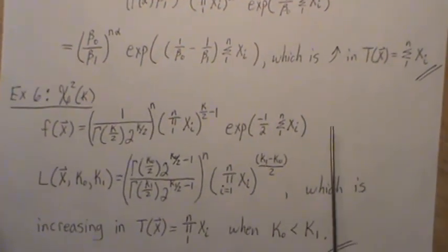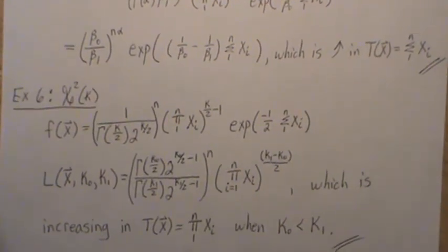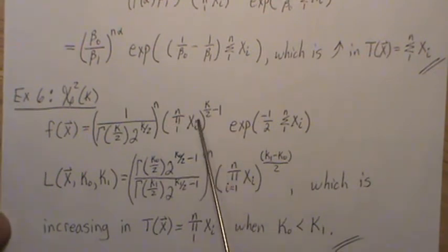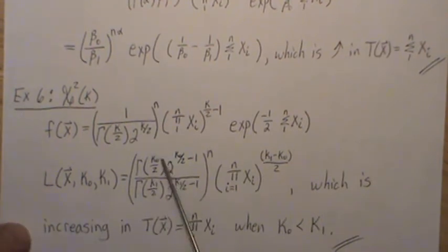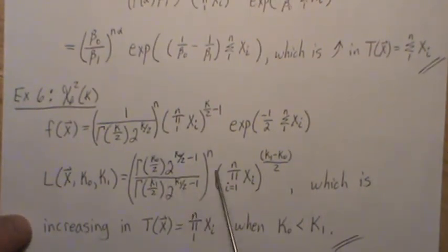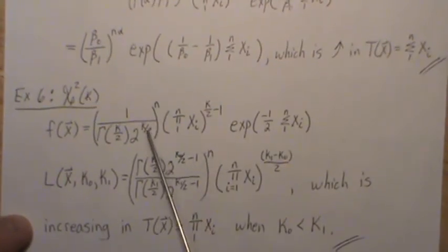Now, the last example, chi-squared with k degrees of freedom. This is the joint density, which is the product of each of those little marginal densities. And we create the likelihood ratio. So it means we take this in the numerator with k₁ in for k.